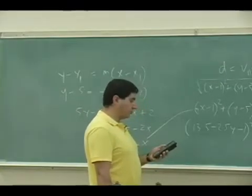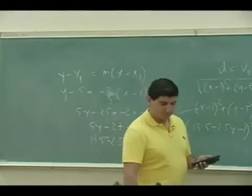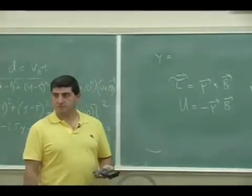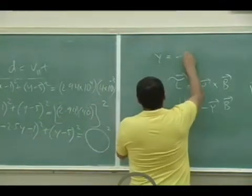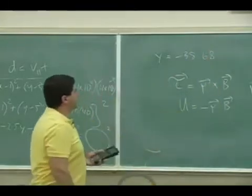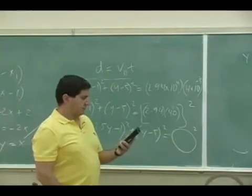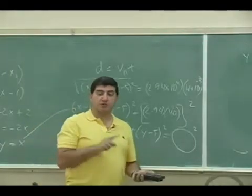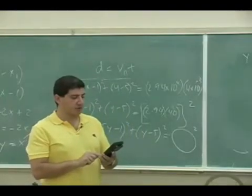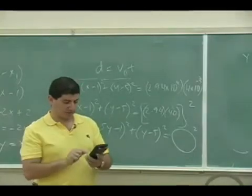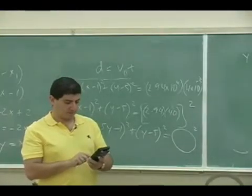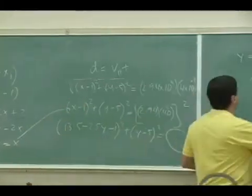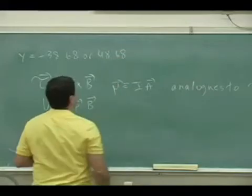Y is negative 38.68. It gave me a negative answer. What is it supposed to be here? X is supposed to be negative. So it gave me a negative answer. There is perhaps another answer. Oh, the other answer is 48.68, right?